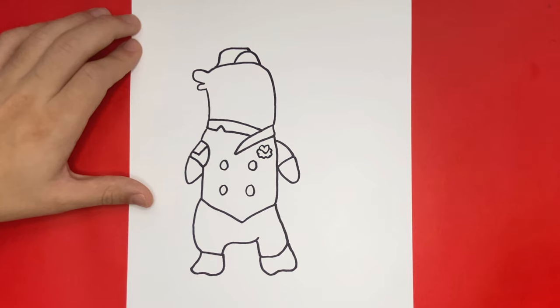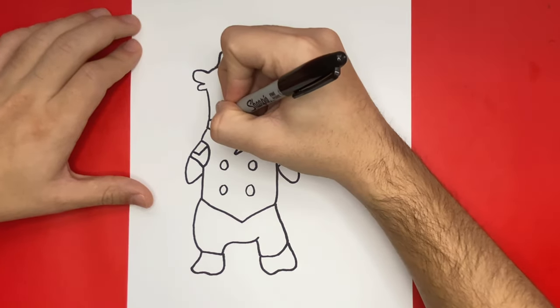All done making Pip's hat, awesome. Now let's go right below and let's begin to make an outline for the face.